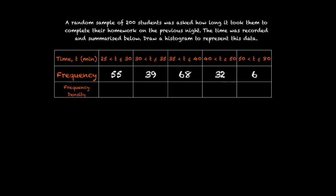So looking at the first column, the frequency is given as 55. And the class goes from 25 to 30, which means the class width is 30 minus 25. And so the frequency density is 55 divided by 30 minus 25.